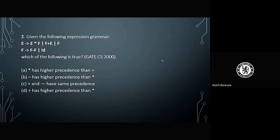The given question which we have is we have an expression grammar E and F, and we need to know which one of the following is true. This is a GATE CS 2000 question. Our options are: star has higher precedence than plus, minus with respect to star plus and minus have same precedence, and plus has higher precedence than star.